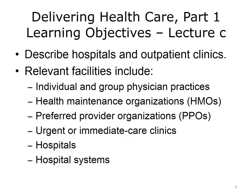Relevant healthcare facilities include individual and group physician practices, health maintenance organizations or HMOs, preferred provider organizations or PPOs, urgent or immediate care clinics, and hospitals. The different types of hospitals and their clinical and corporate structures, including hospital systems, will be discussed.